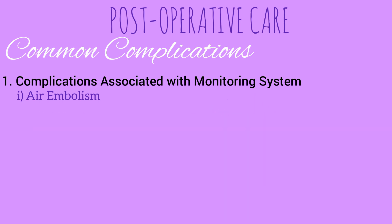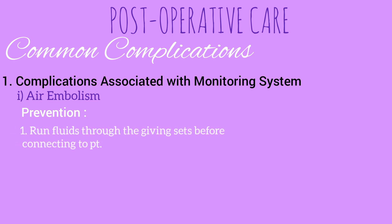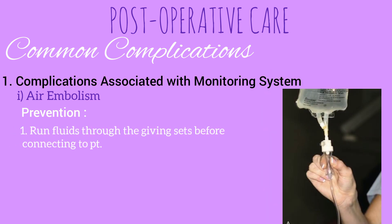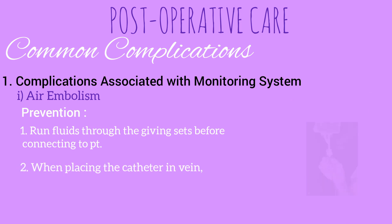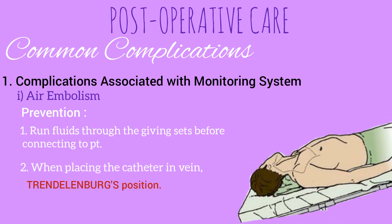To avoid this complication in the first place, run fluids through the giving sets before connecting them to the patient. When placing the catheter in a vein, the patient should be placed in the Trendelenburg position — this will raise the central venous pressure and prevent air from entering inside.